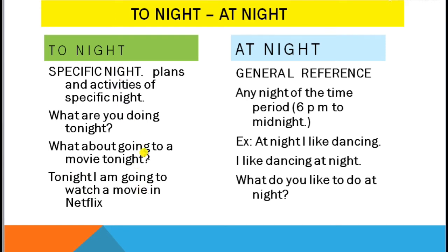'At night' is a general reference. When we discuss general activities or a general routine, we use 'at night' — that is, any night in the time period between 6 p.m. and midnight. For example: 'At night, I like dancing.'